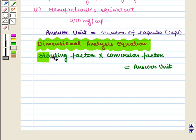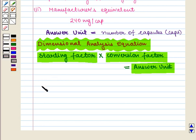Now here, the starting factor is 36 kg times the first conversion factor, which is 40 mg upon 1 kg.